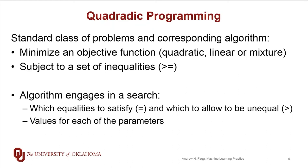The problem definition is that there is an objective function that we're trying to minimize. It has both quadratic and linear components. We can also have a mixture of quadratic and linear terms. But in minimizing the objective function, we also have to satisfy a set of constraints. These constraints are expressed in terms of a set of inequalities.